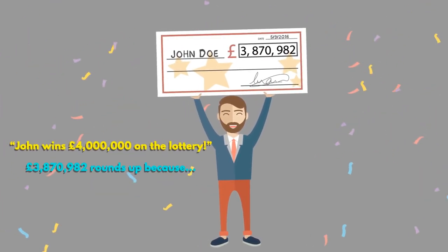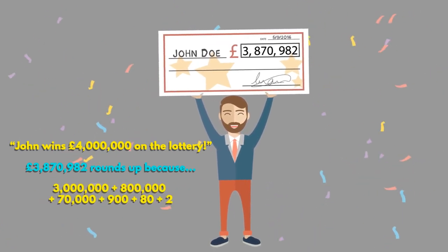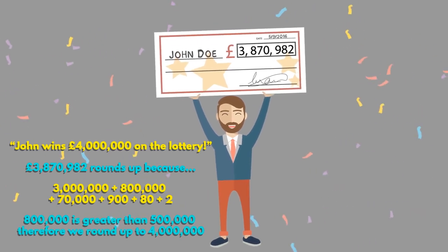When a news article reports on a lottery win of £4 million, this number will have been rounded to one significant figure. The 3 represents £3 million, and with the following number being bigger than 5, this gets rounded to 4 million.